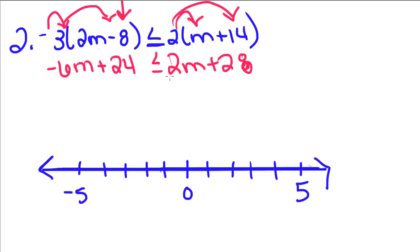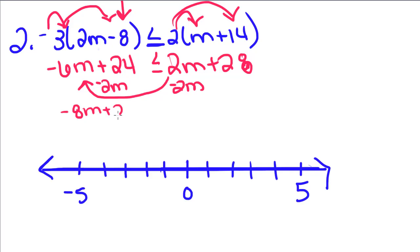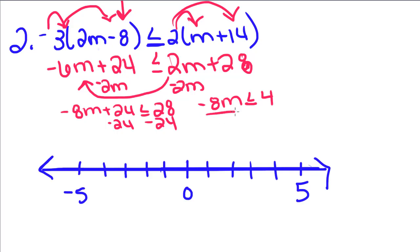I'm going to subtract 2m from both sides, so this becomes negative 8m plus 24 less than or equal to 28. I'm going to subtract 24 from both sides and I get negative 8m is less than or equal to 4. I'm going to divide by negative 8 on both sides. Since I divided both sides by a negative number, I'm going to flip my inequality, and if I reduce this, this becomes negative 1 half.